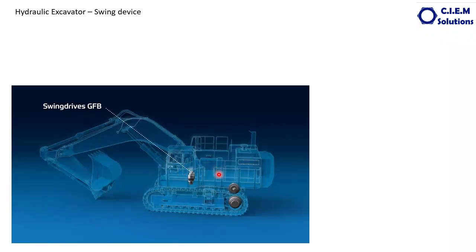This is the hydraulic excavator. The component shown here is called the swing device. Depending upon the size of the excavator, the swing device may be one or two. All construction machines seen on roads and canals — small construction machines up to around 45 to 50 tons — will have only one swing device. Higher capacity machines, particularly those working in mining, will have two swing devices.